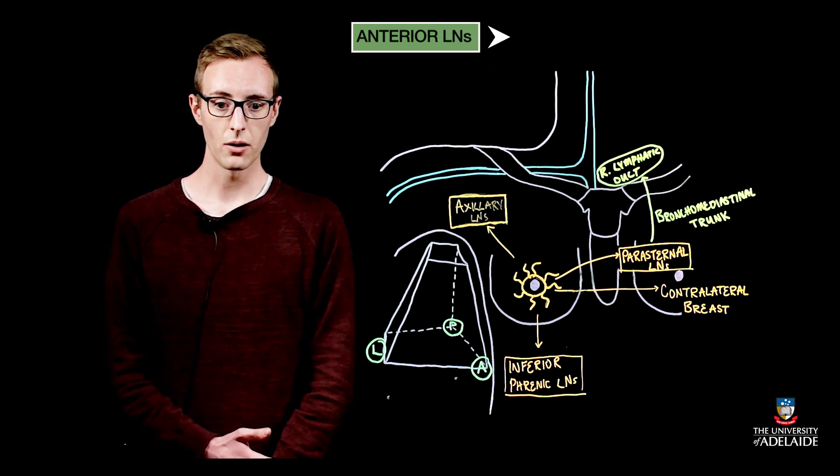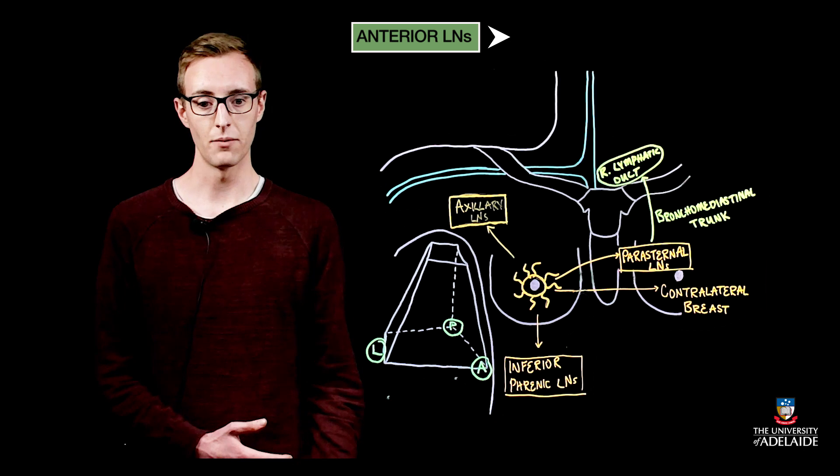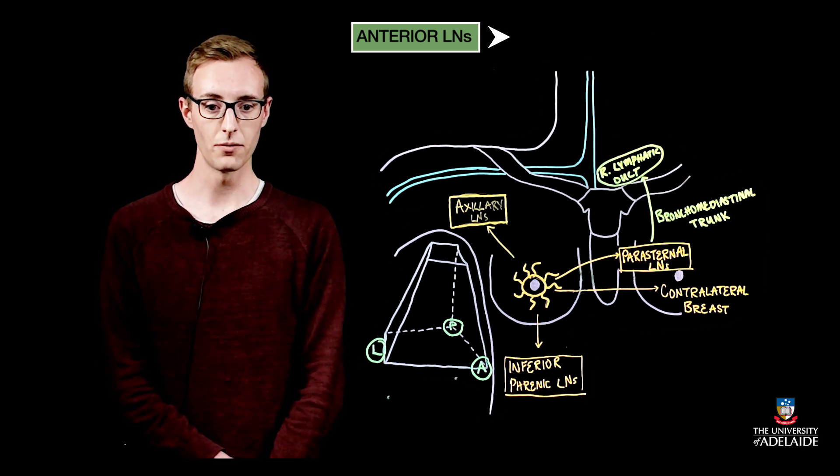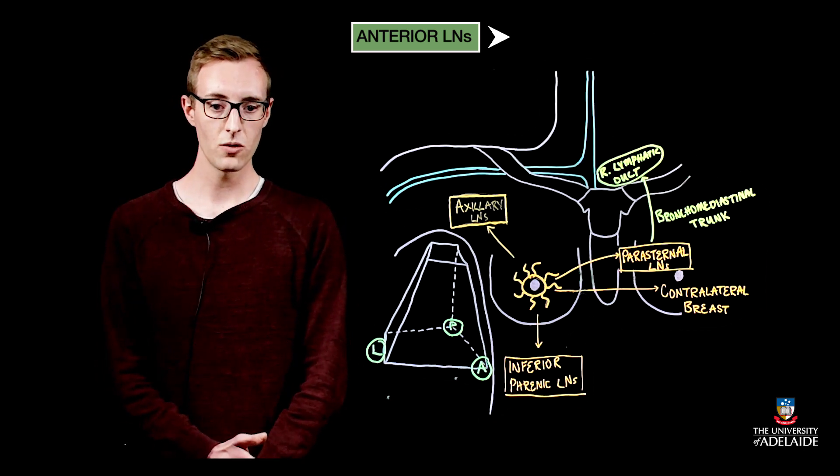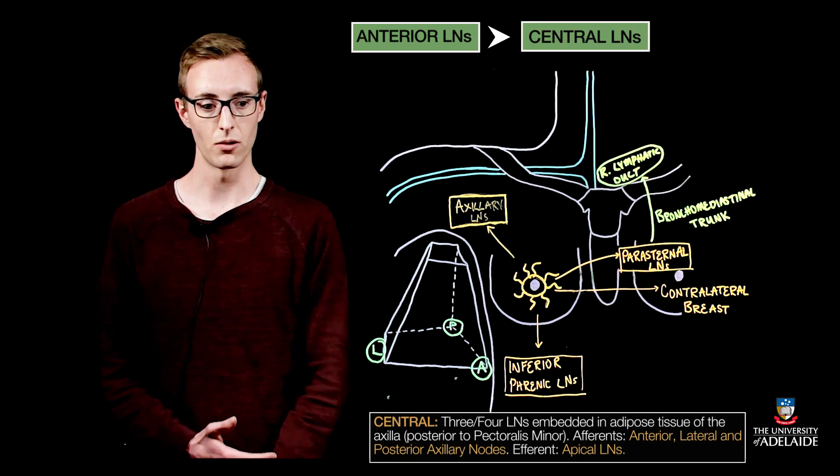As Ann mentioned before there are several peripheral routes which allow lymphatic drainage directly to the apical lymph nodes. The anterior, lateral and posterior nodal groups drain superiorly to the central lymph nodes.